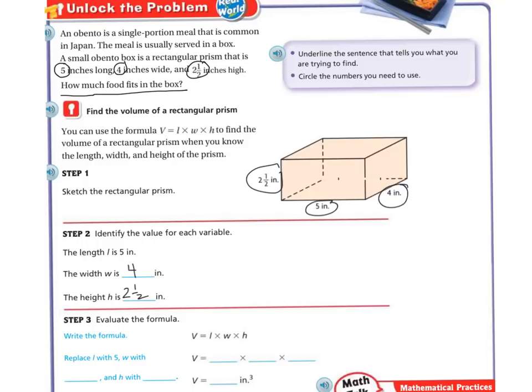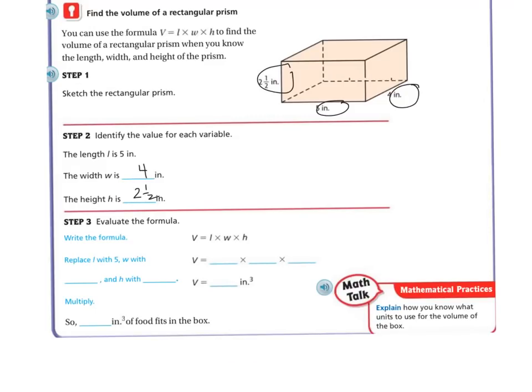So now we're going to evaluate the formula. So volume equals 5 times 4 times 2 1/2. So I'm simply going to do it. Well 5 times 4 is 20. And 20 times 2 1/2.